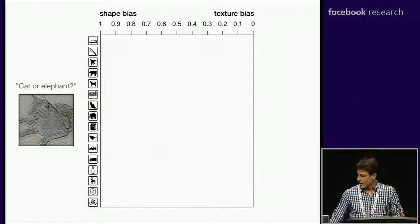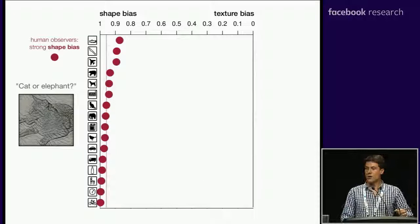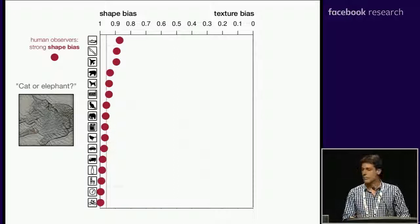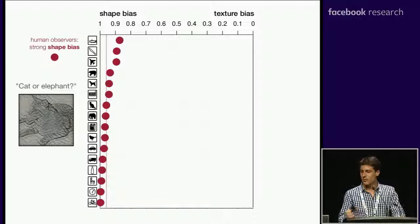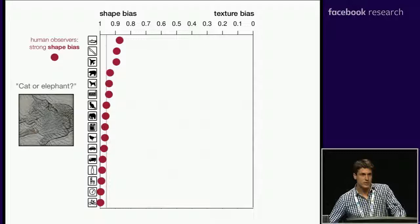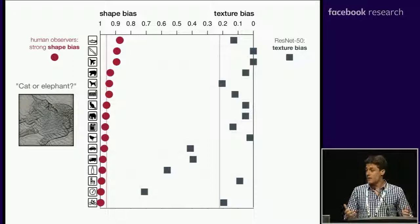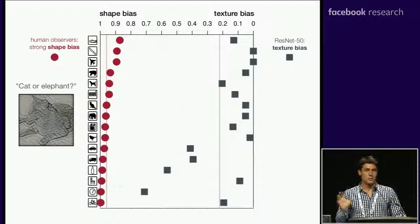We generated thousands of these images and showed them to both CNNs and human observers in the lab, recording the classification decisions. For humans, if you plot the responses, we see it's all on the shape side. For this cat with elephant texture, if the response was 'cat' it counts towards shape bias; if the response was 'elephant' it counts towards texture bias. Humans actually have a super-strong shape bias — there's no doubt about that. But ResNet-50 trained on ImageNet is completely on the opposite side of the spectrum: it has a huge texture bias. This is really a key difference between human and CNN object recognition.